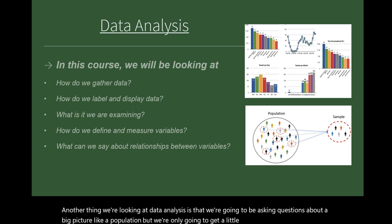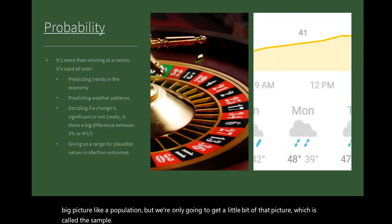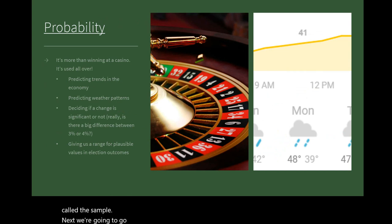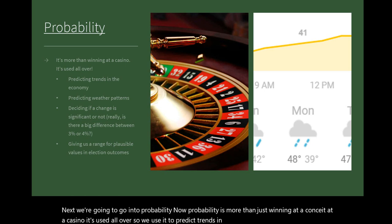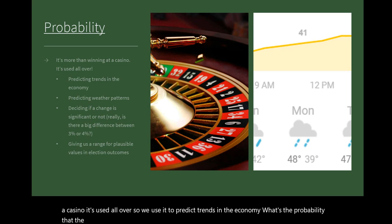Next we're going to go into probability. Now probability is more than just winning at a casino - it's used all over. We use it to predict trends in the economy. What's the probability that the stock is going to change? Predicting weather patterns - if we have the exact same temperature and humidity three years ago, did it also result in rainfall or not?